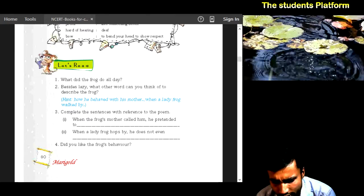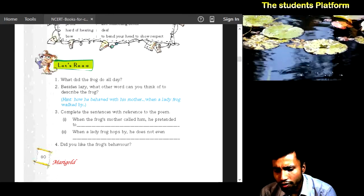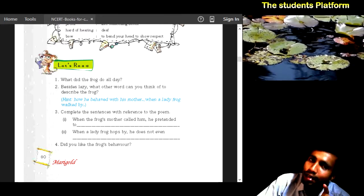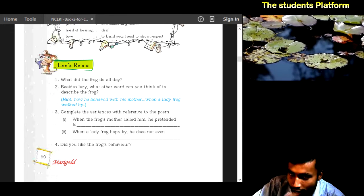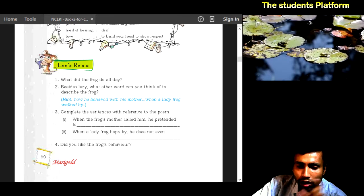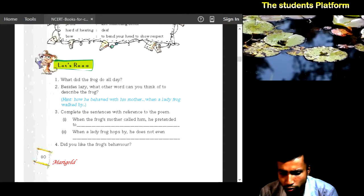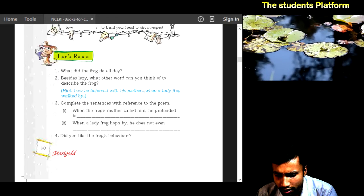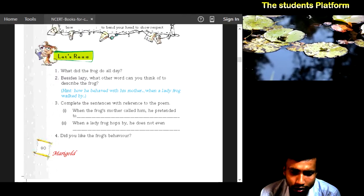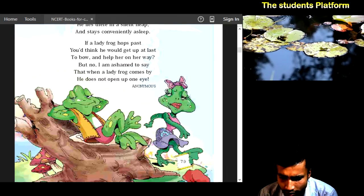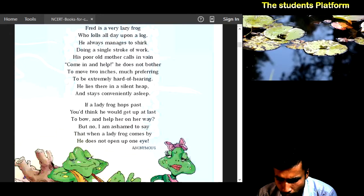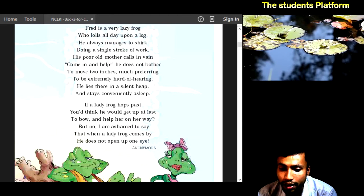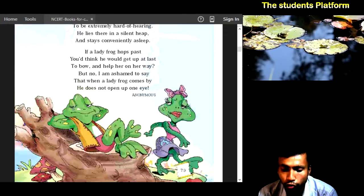Besides lazy, what other word can you think of to describe the frog? You can say sluggish, you can say idle. This means the word is sluggish. Complete the sentence with reference to the poem. When the frog's mother called him, he pretended to be asleep. What does he do? He pretended to be asleep. He does not bother to move two inches and much preferring to be extremely hard of hearing or to be asleep.